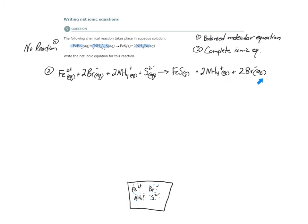Now that I have the complete ionic equation, I can do step three: the net ionic equation. The net ionic equation is going to show us what actually happened in this reaction. This reaction is occurring in aqueous solution, and we see a solid precipitate form, so I know a reaction did occur. The net ionic equation is going to show the reaction that occurred and eliminate all of the extra noise — all substances present in the solution but not involved in the reaction.